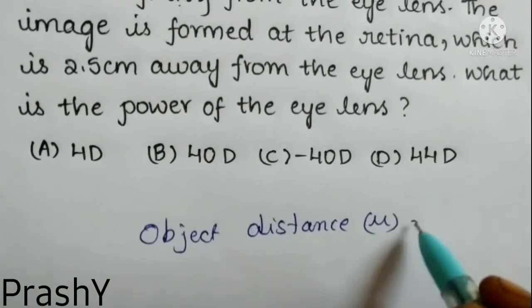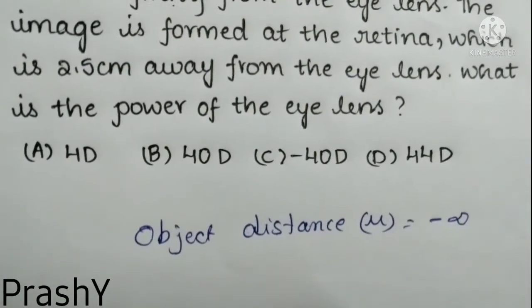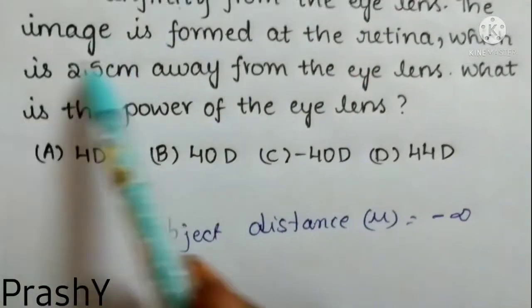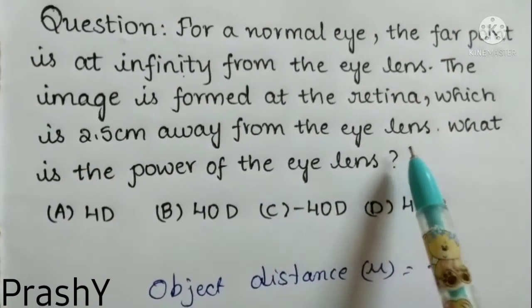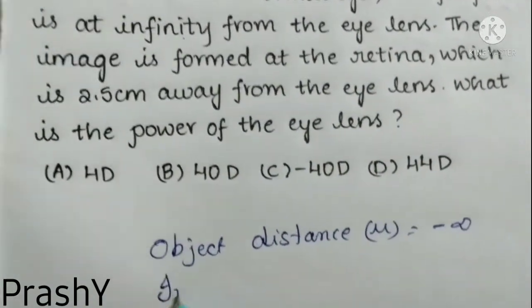And the image is formed at the retina which is 2.5 centimeter away from the eye lens, so the meaning of this sentence is that image distance v is equal to 2.5 centimeters.